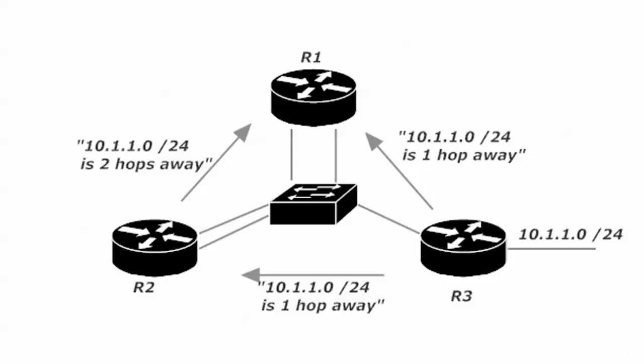Hops are not a very scientific metric, but that's the only metric that distance vector protocols understand. One router to another is one hop, to the next router is two hops, etc. Router 2 is getting that advertisement and sending it out another interface to router 1.